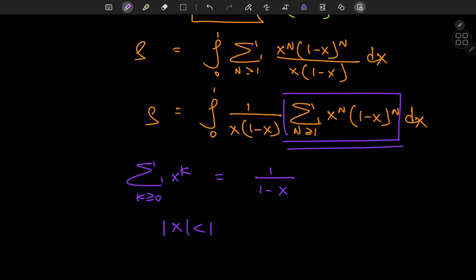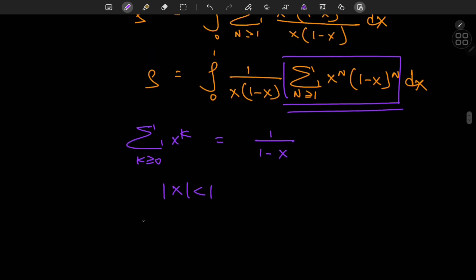And that's the case for this series over n as well. We have the sum over n of x to the n times 1 minus x to the n, and because x lies between 0 and 1, the absolute value of x times 1 minus x is always going to be less than 1.